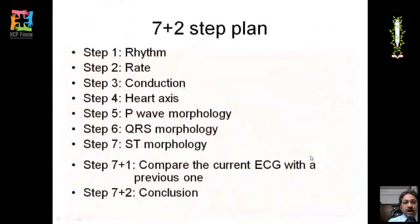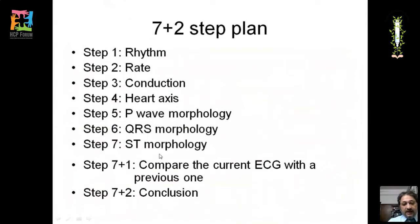How do we read an ECG? The first step is to assess the rhythm, then the rate, then the conduction, then identify the heart axis, and then evaluate the morphologies of the P wave, QRS complex, and ST segment. If a previous ECG is available, compare it with the current one, then conclude.